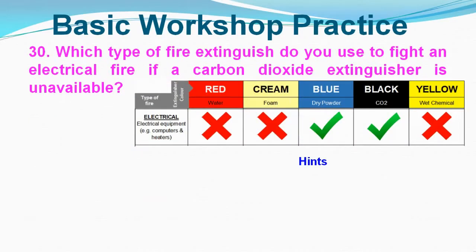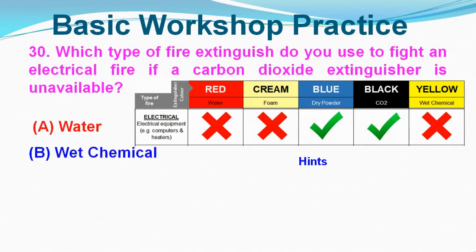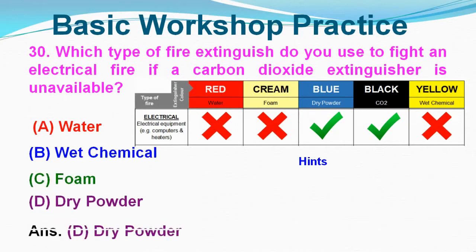Question No. 30: Which type of fire extinguisher do you use to fight an electrical fire if a carbon dioxide extinguisher is unavailable? Option A: Water, Option B: Wet Chemical, Option C: Foam, Option D: Dry Powder. Correct answer is Option D, Dry Powder.